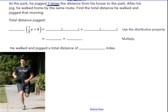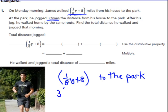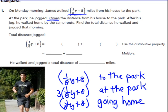So it might be easier if you think about it as, okay, what is he doing? James is walking to the park. So he went 1/8Y plus 8. At the park, he does 3 times this distance, 1/8Y plus 8. That's at the park, he's jogging this. And then he has to go home from the park. So he's going 1/8Y plus 8 going home. So how many 1/8Y plus 8 did he do? 1 plus 3 more plus 1 more makes a total of 5.